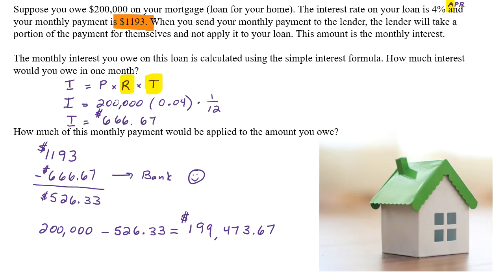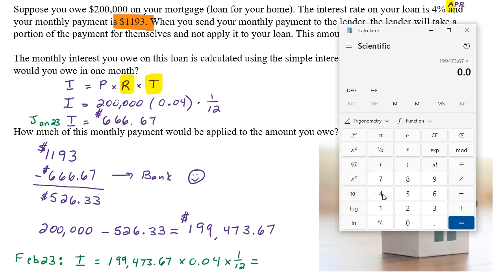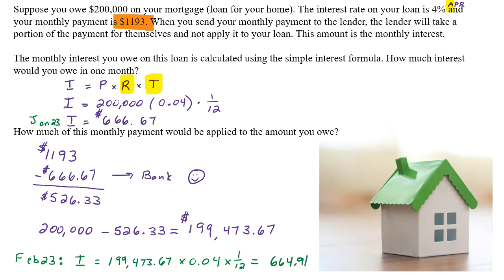The next month — say this was January, now it's February — to calculate the interest for that month, your principal has changed. Now you owe $199,473.67 times the rate times the time, which is one month. So it's going to be a little bit less interest because your principal was a little bit less. We get $199,473.67 times 0.04 divided by 12, and now your interest is $664.91. The same process happens again: the bank takes out $664.91 from the $1,193 you send in and reduces your principal with what's left.